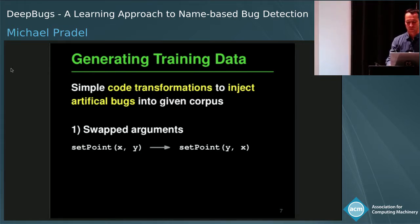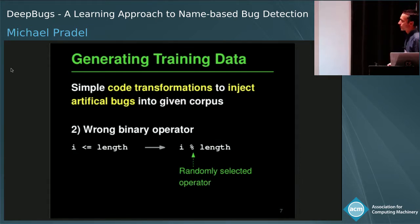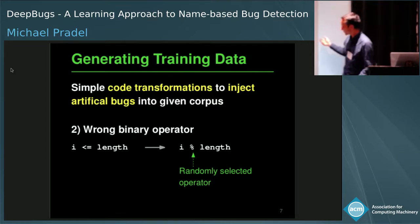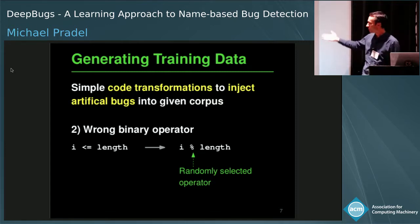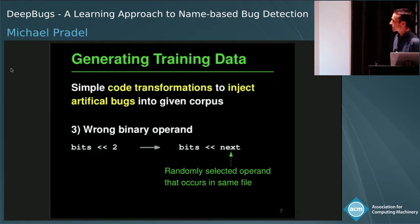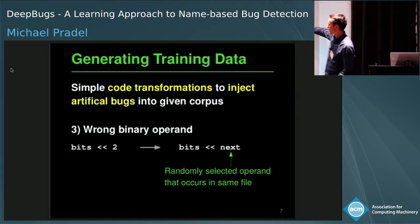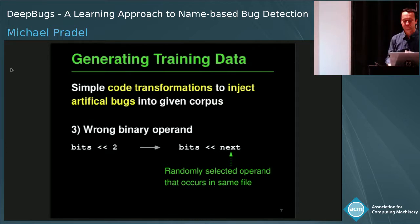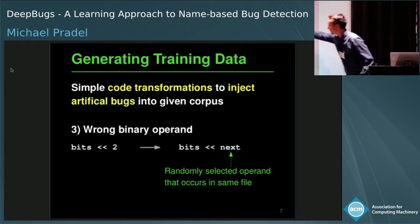We do the same for different bug patterns. Another one we consider is wrong binary operators — we simply transform code to introduce artificial bugs, replacing an operator like less-than-or-equal with a randomly selected other operator. A third is wrong binary operands, where we take one operand of a binary expression and replace it with another randomly selected operand from the same file, keeping things realistic.